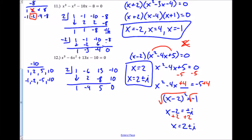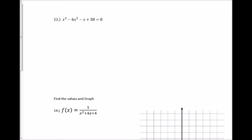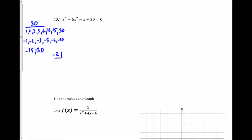For this next problem I do the same setup, looking at factors of 30: 1, 2, 3, 5, 6, 10, 15, 30, plus the negative versions. I'll try x= negative 2. My coefficients are 1, negative 6, negative 1, and 30. I bring down the 1, multiply, add straight down, multiply, add straight down, multiply and add — got it on the first try.